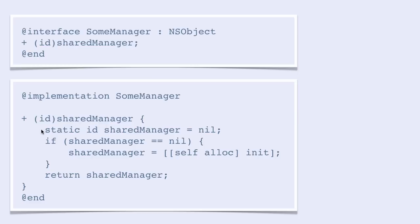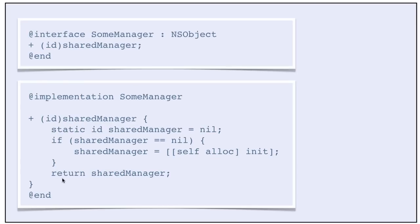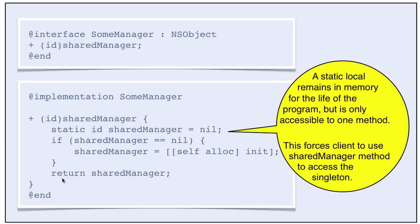Here is a static local variable called sharedManager. If sharedManager is nil — which is the first time this method is called — the sharedManager will be created and returned. The next time we call sharedManager, it will not be nil, so the creation block is never executed. Instead, sharedManager is returned. This code ensures that we only have one instance of the sharedManager. A static local remains in memory for the life of the program but is only accessible to one method, and this forces the client to use the sharedManager method to access the singleton.